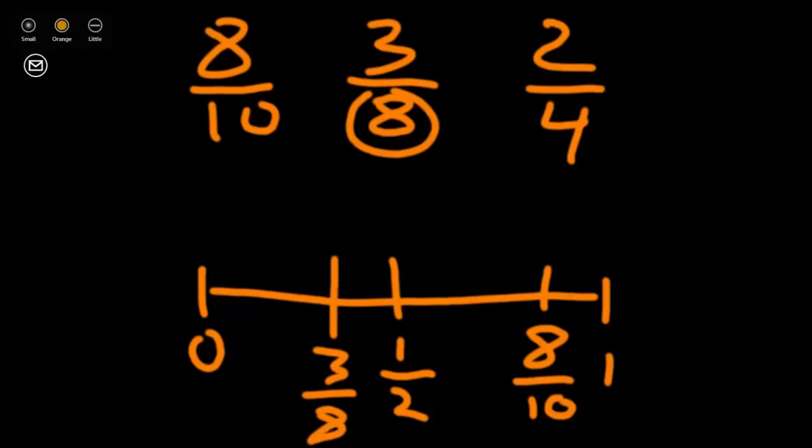Let's look at our last one, 2 fourths. 2 fourths, well, let's look at our denominator. Half of 4 is 2. Our numerator is 2. So therefore, 2 fourths would be equivalent to 1 half and fall right here on our number line.